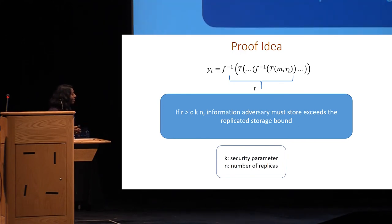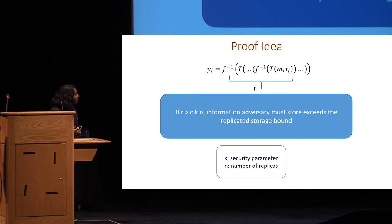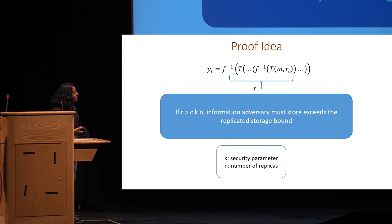What should the number of rounds R be? In the paper, we show that by suitably setting the parameters — specifically, if R is greater than K times N, where K is the security parameter and N is the number of replicas — then the amount of information the adversary must store must exceed the replicated storage bound, giving us soundness.